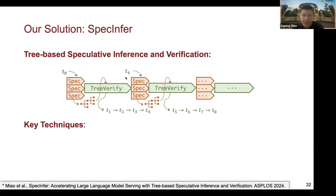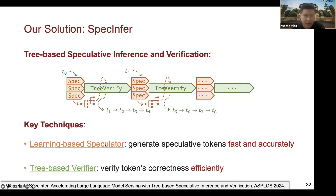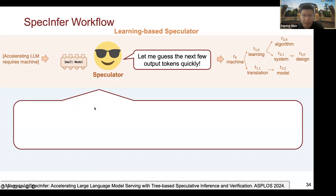To address these practical challenges, we propose our system called SpecInfer, the first tree-based speculative decoding system. SpecInfer consists of two key techniques: a learning-based speculator for generating speculated tokens fast and accurately, and a tree-based verifier for verifying token correctness efficiently. The speculator takes a sequence of tokens as input and, unlike previous approaches that output a sequence, produces a speculated token tree. Our goal is to maximize the overlap between the predicted tokens and the large model's original output, and we found that a tree works better for this goal.